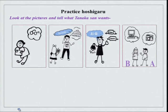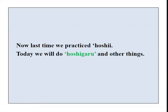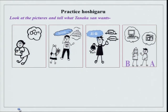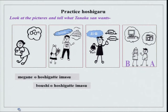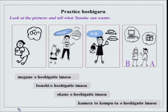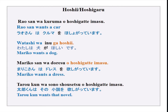Look at this picture and let us see what Tanaka-san wants. This is for third person. Mariko-san wa megane wo hoshigatte imasu. Tanaka-san wa boushi wo hoshigatte imasu. Michiko-san wa okane wo hoshigatte imasu. A-san wa kamera wo hoshigatte imasu. B-san wa computer wo hoshigatte imasu. You can practice hoshi and hoshigatte imasu like this.